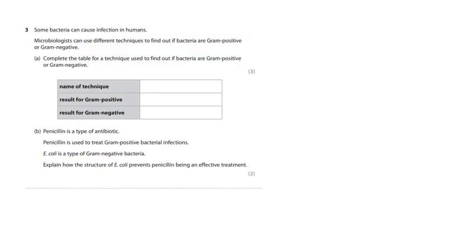Some bacteria can cause infection in humans. Microbiologists can use different techniques, gram positive, gram negative. Yes, we know this. We've done this. Complete the table to find out if bacteria are gram positive or negative. So the name of the technique and the results for positive and negative. So it's called gram staining. You do a gram stain, and I remember purple and pink. So gram positive, it goes purple, and gram negative, it's a much lighter pink color, purple and pink.